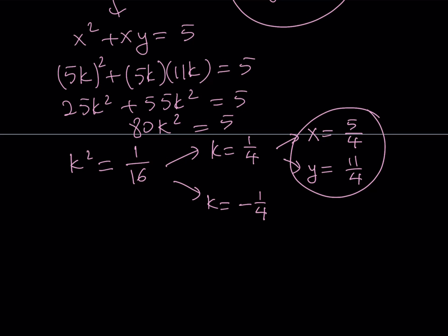My second pair is going to come from k = -1/4. Since x is always 5k, regardless, then from here, x is just going to be -5/4, and y is going to be -11/4 as before.